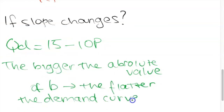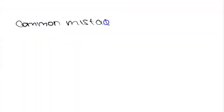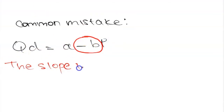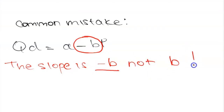The last thing to mention in this demand section is a common mistake students often make. When a Paper 3 question asks for the slope of a demand function given in the form a minus bp, the slope is negative b — it is not just b. The slope for a demand curve is always negative because the demand curve is downward sloping, so make sure to write negative b, not b.